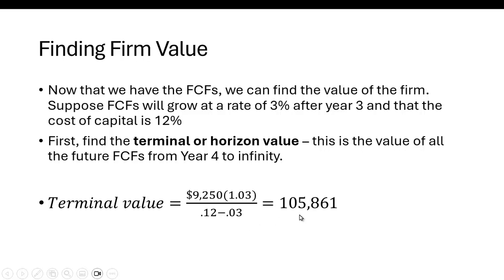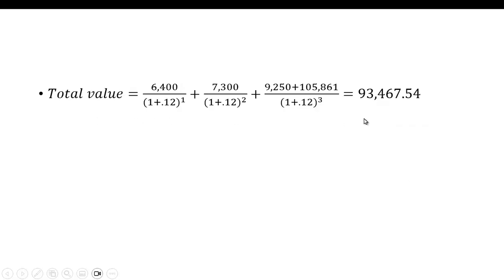And now we can just finish the present value equation: present value of the first free cash flow in year one, plus the present value of the free cash flow in year two, plus the present value of the free cash flow in year three, plus the horizon value. Remember, we're doing this calculation, so the terminal value in year three is going to be equal to the free cash flow in year four divided by R minus G. And if you take the present value of all of this, you get 93,467.54.